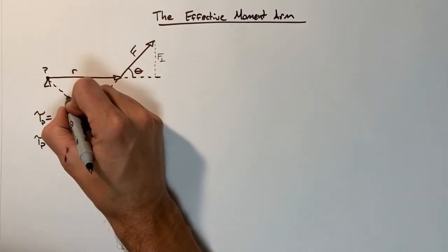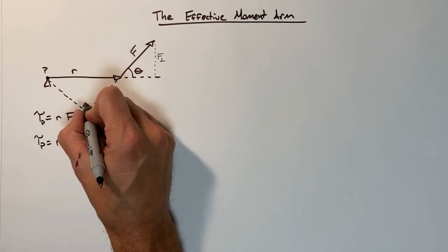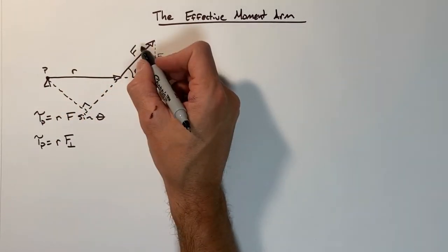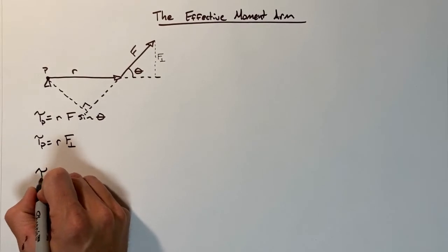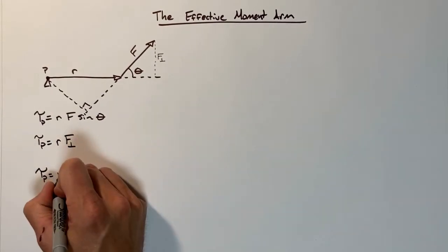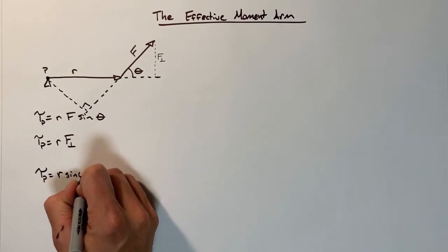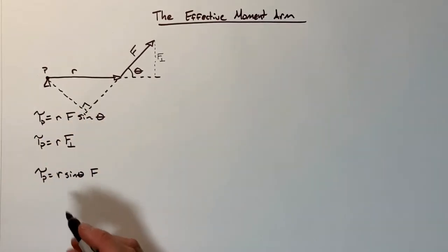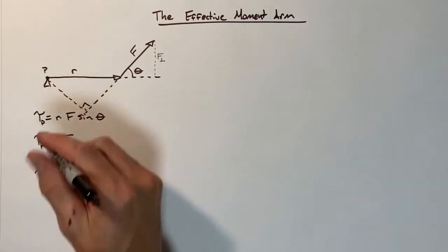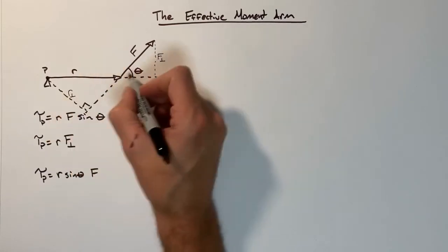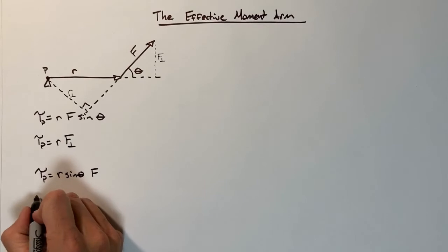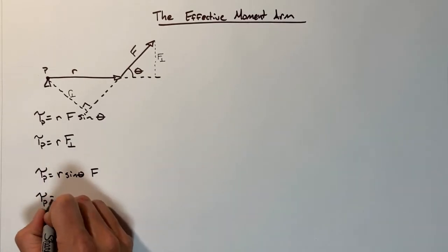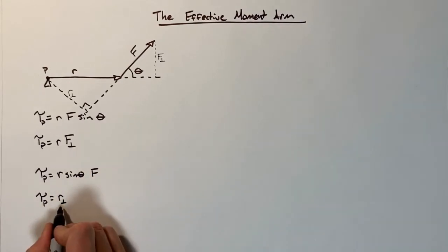Rather than looking at the component of force which is perpendicular to the radius vector, what we can do is look at the component of the radius vector which is perpendicular to the force vector. Really what it's doing is taking our torque equation and saying let's look at this as r·sin(θ) times F. Mathematically this and this are identical. What we're concerned with is looking now at our r that is perpendicular to F.